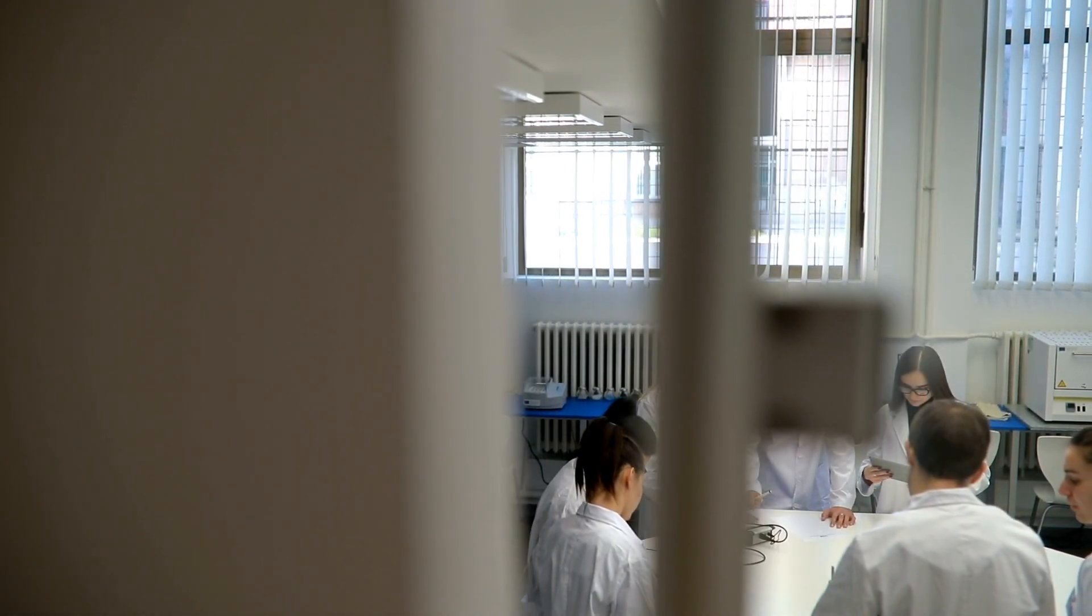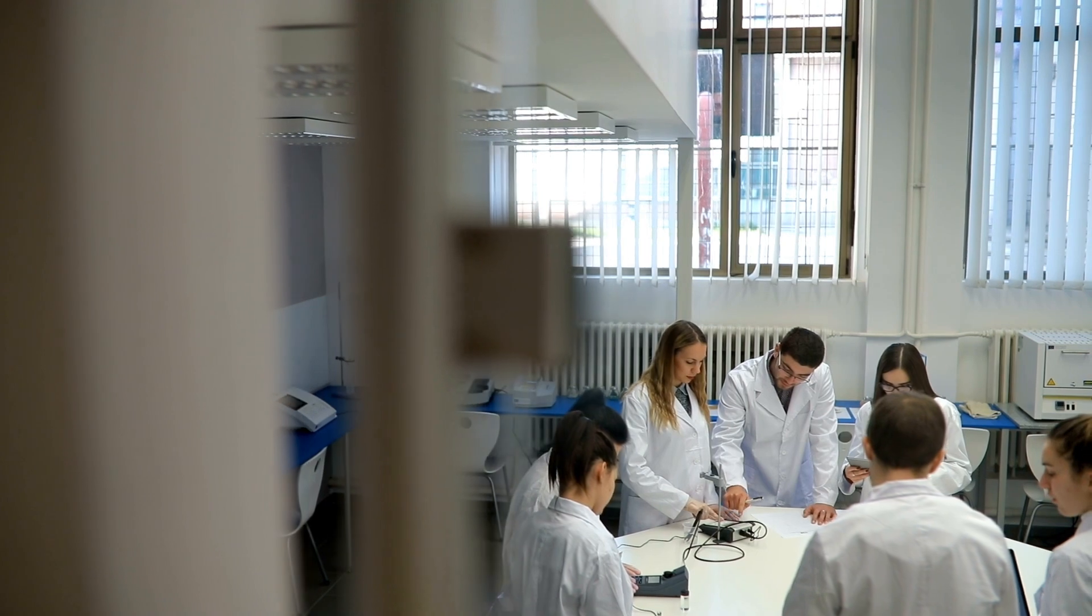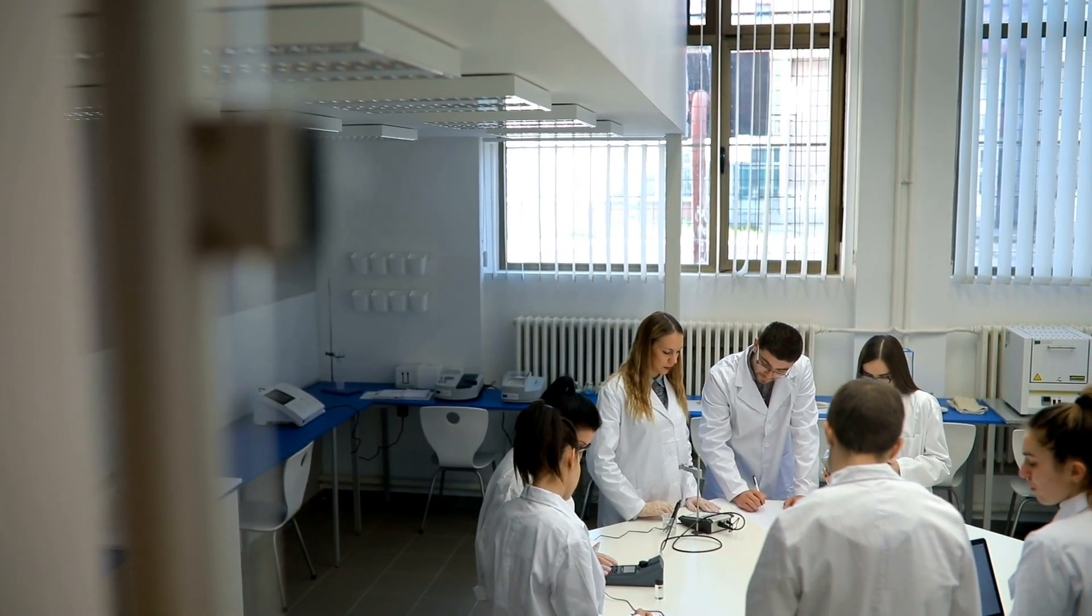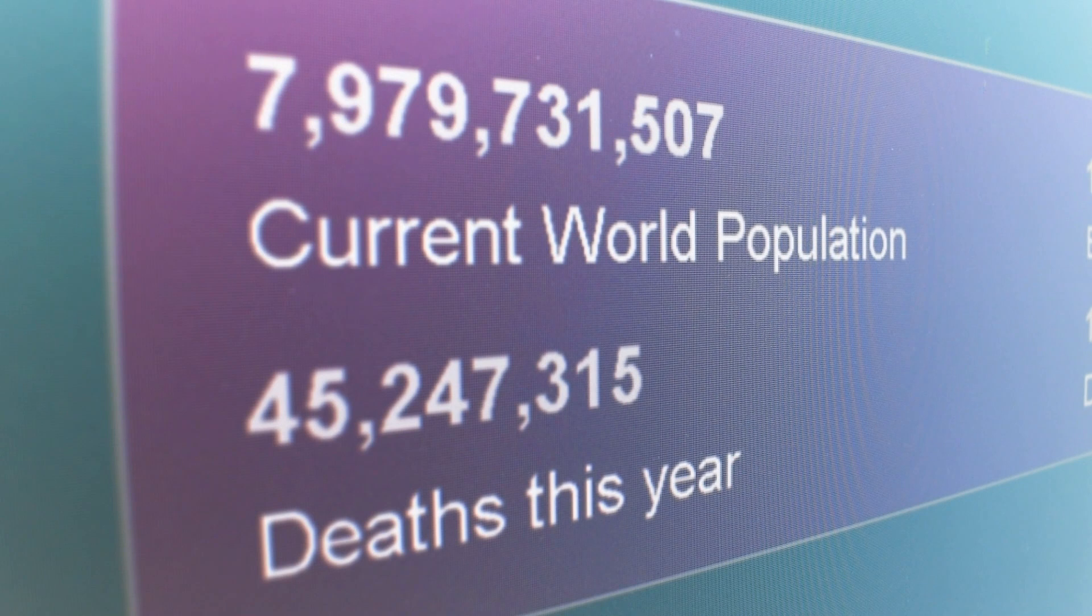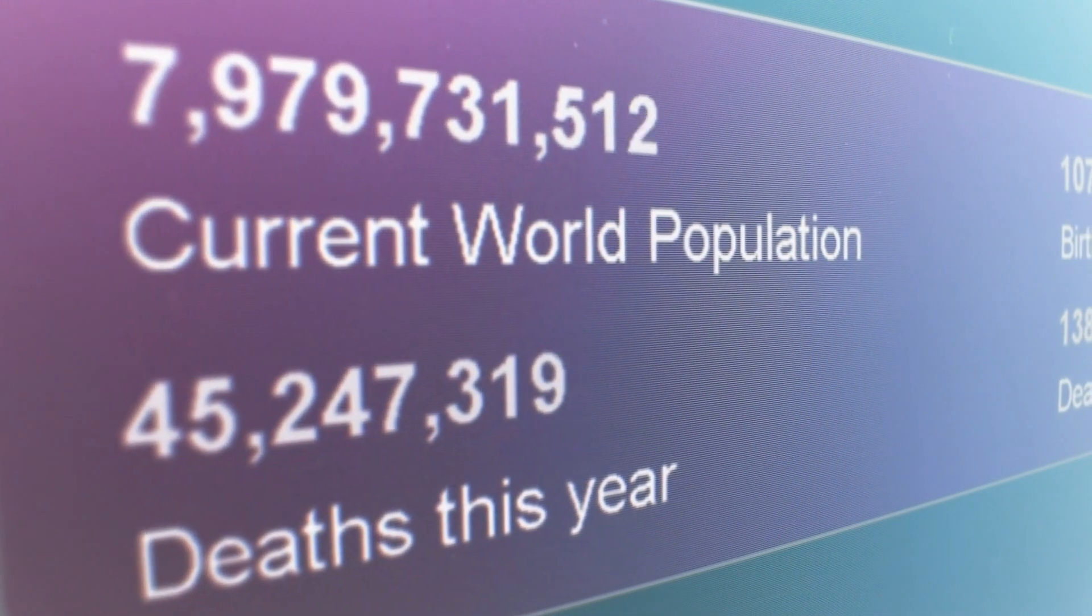The second method of determining the universe's age involves studying exploding stars, specifically type Ia supernovae. These celestial events occur when a white dwarf star accretes matter from a nearby star until it reaches a critical mass and explodes.